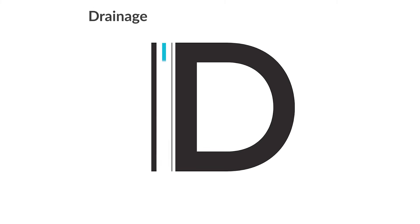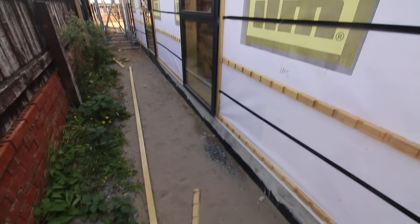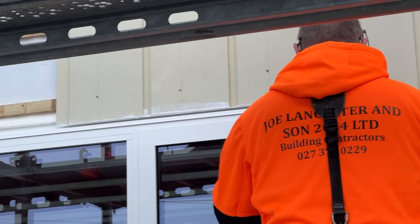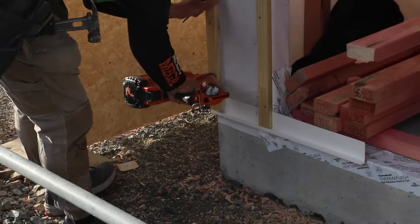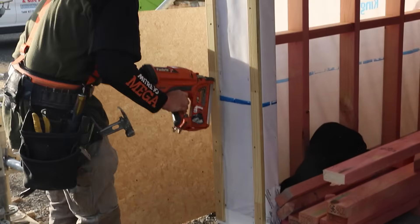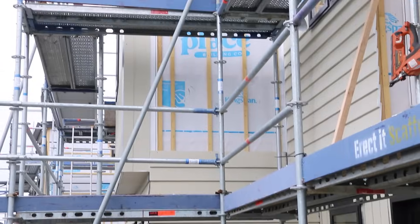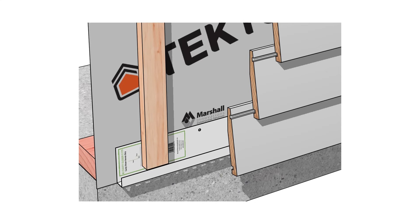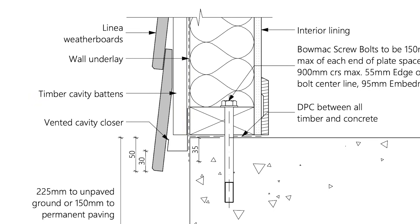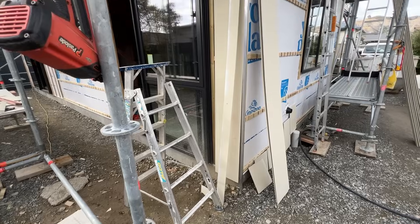The next D is drainage. Some water inevitably finds its way past the first line of defense, so designing pathways for water to drain back out is key. This is the principle behind the cavity system for installing exterior cladding. The cavity is constructed from vertical battens leaving a space of about 20mm between the cladding and the wall framing. A perforated strip at the base of each wall allows water to easily drain away — if water ends up behind the cladding, it travels down that 20mm gap before it can get into the building.